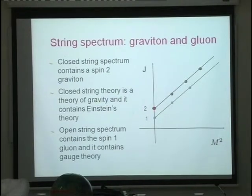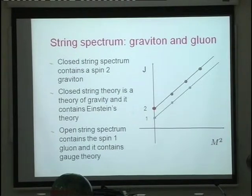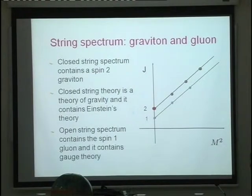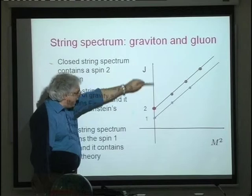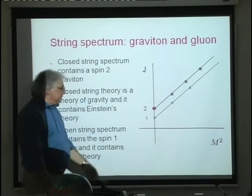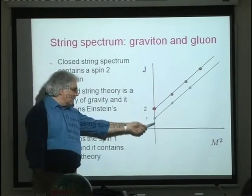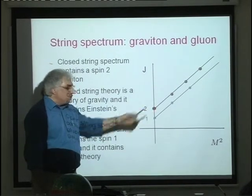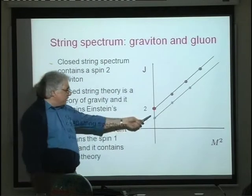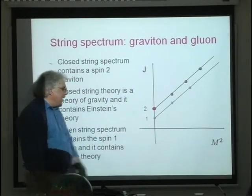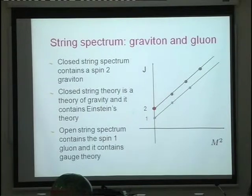This is the key point: if you look at the spectrum of a closed string, with angular momentum on one axis and the square of the mass on the other, there is a mass-zero, J=2 particle in the spectrum. For open strings there is a mass-zero, J=1 particle.